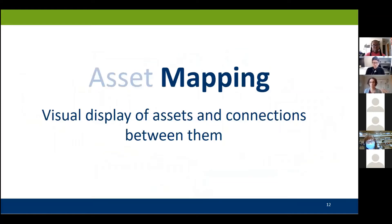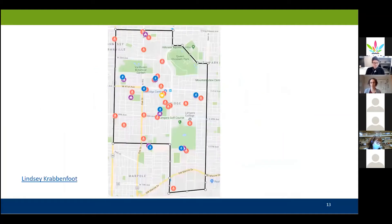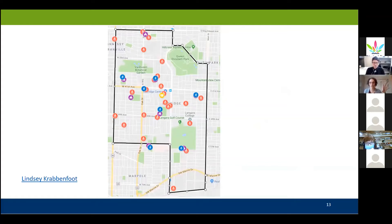When we talk about mapping it, we're just talking about making a visual display of the assets that we've identified and the connections between them. Here's the most straightforward idea of an asset map — an actual physical map. This is from a children's librarian from Canada who said she wanted to know about the resources available within childcare within a neighborhood, so she made icons for childcare, schools, and other things.